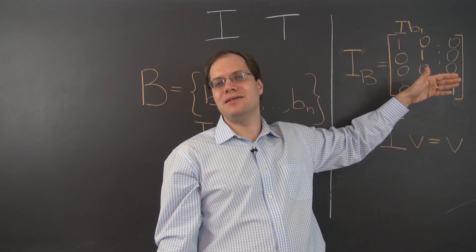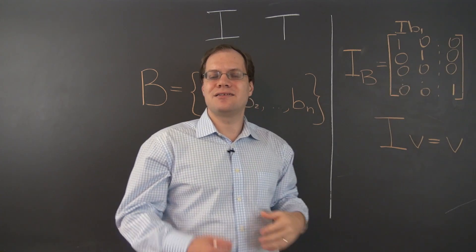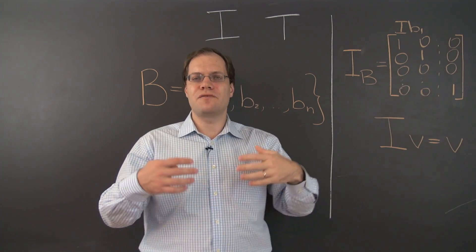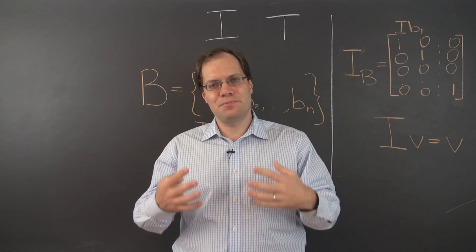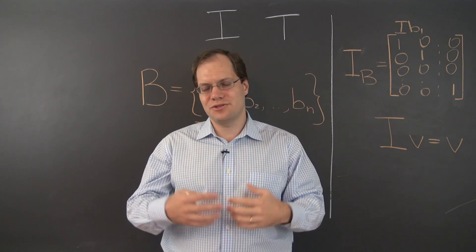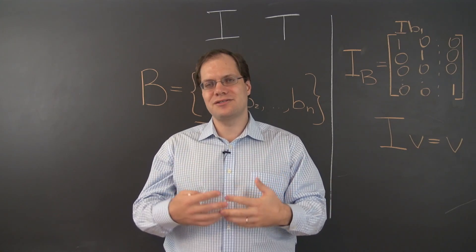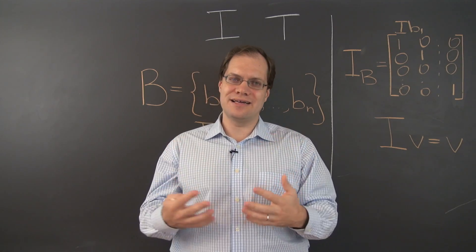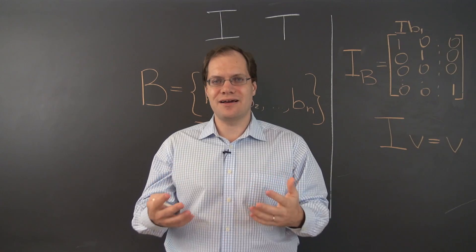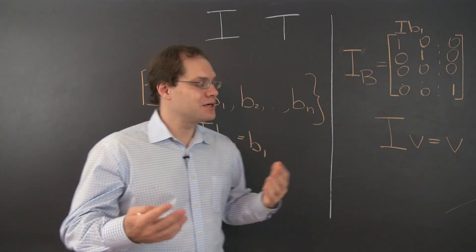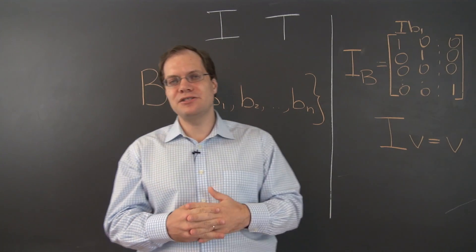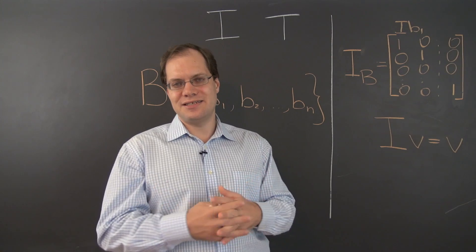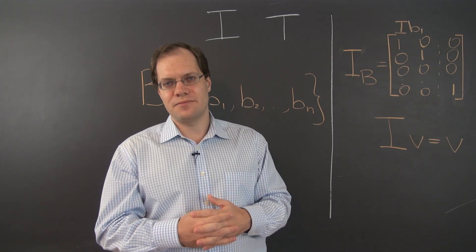So an eigenbasis delivers what, from a certain point of view, is the simplest possible matrix — a diagonal matrix with the eigenvalues on the diagonal. That's it for the component space representation of the identity transformation.